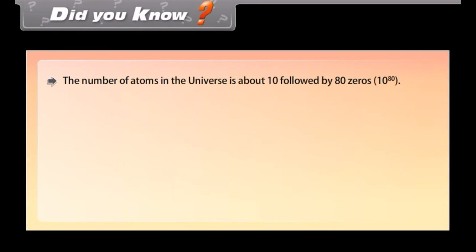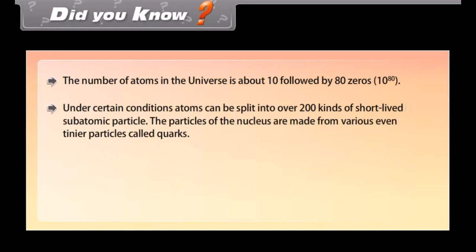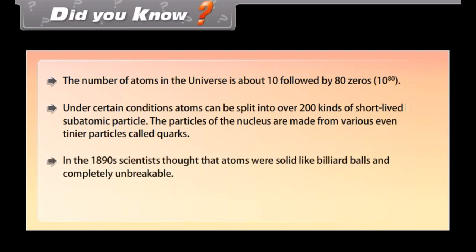Did you know? The number of atoms in the universe is about 10 followed by 80 zeros. Under certain conditions, atoms can be split into over 200 kinds of short-lived sub-atomic particles. The particles of the nucleus are made from various even tinier particles called quarks. In the 1890s, scientists thought that atoms were solid like billiard balls and completely unbreakable. Electrons are 1836 times as small as protons, so they weigh almost nothing.